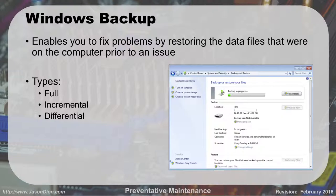The first one is we should be doing backups, and Windows provides a utility called Windows Backup. It enables you to fix problems by restoring your data files that were on the computer prior to an issue. You can do a full backup, an incremental backup, or a differential backup.